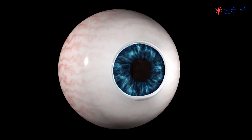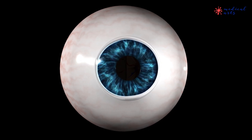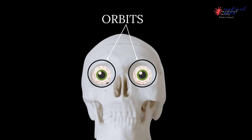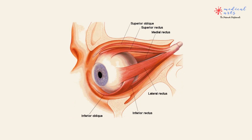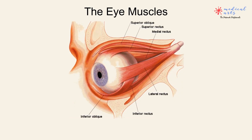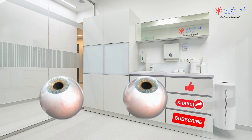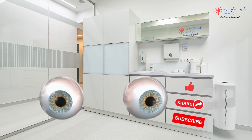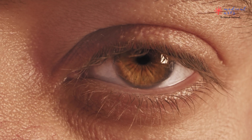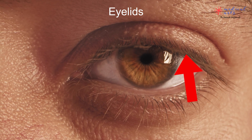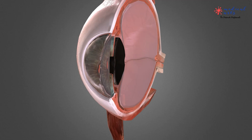The human eye is approximately round in shape and sits in a protective bony socket known as the orbit. Six extraocular muscles attach the eye to the orbit, allowing it to move in all directions. The eyelids protect the eye from the external environment, just like the curtains defend your windows from dirt and dust.